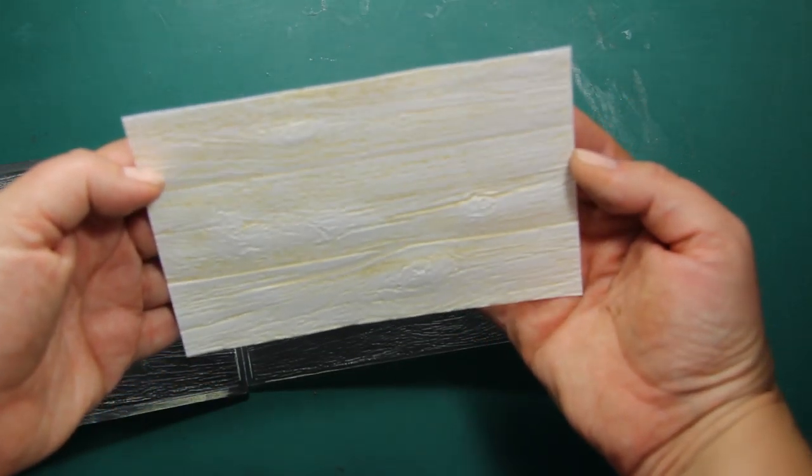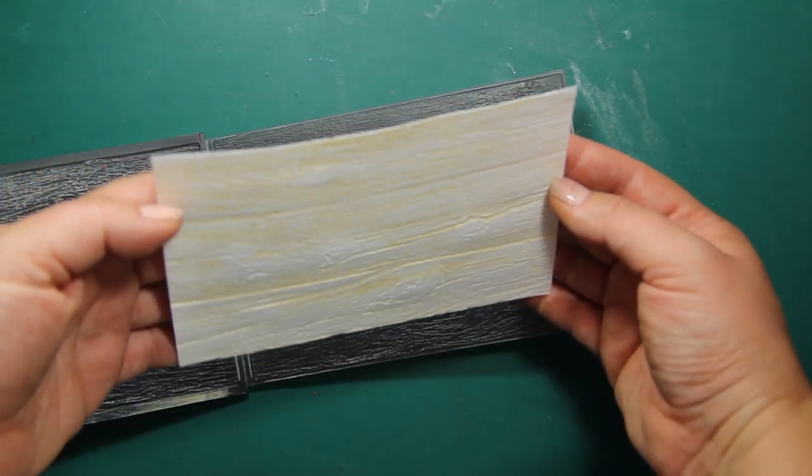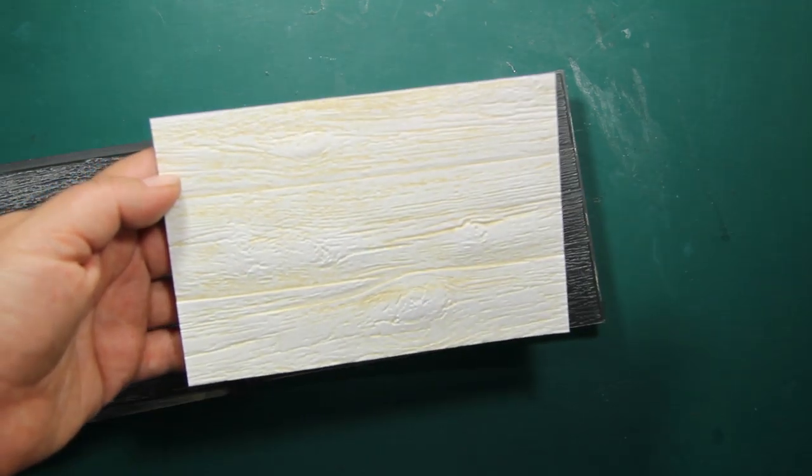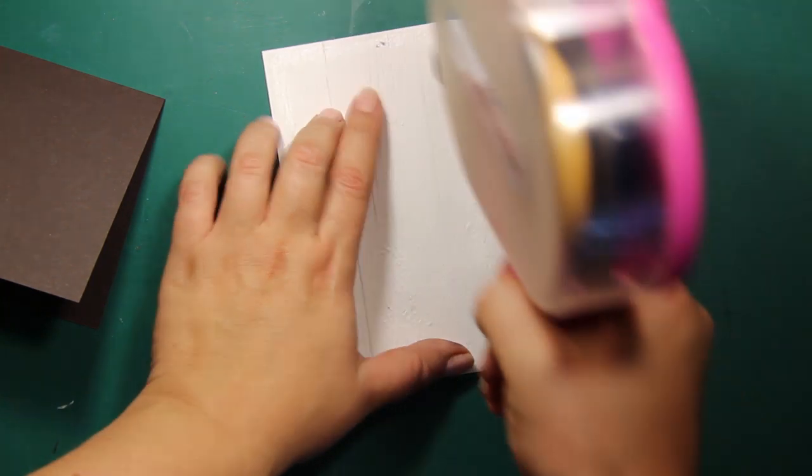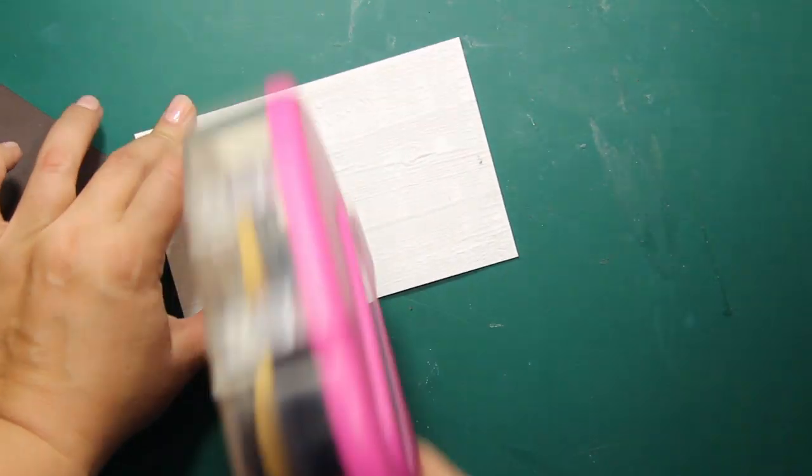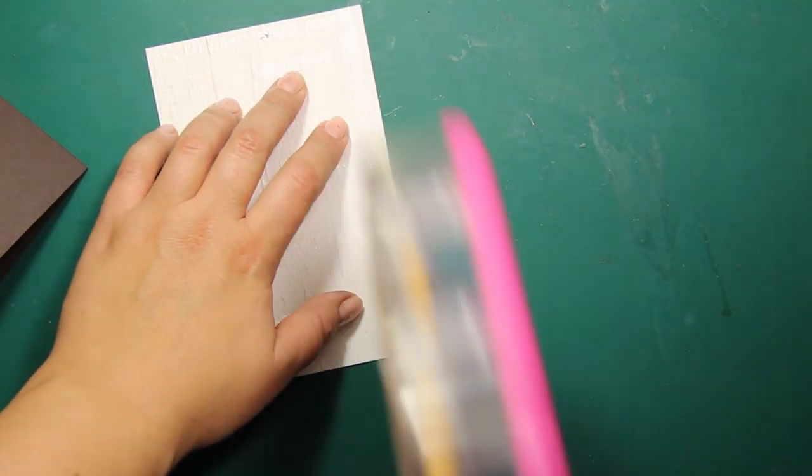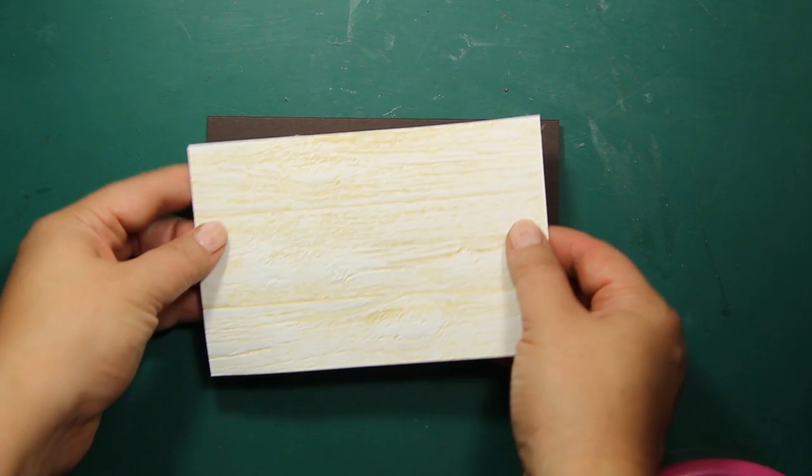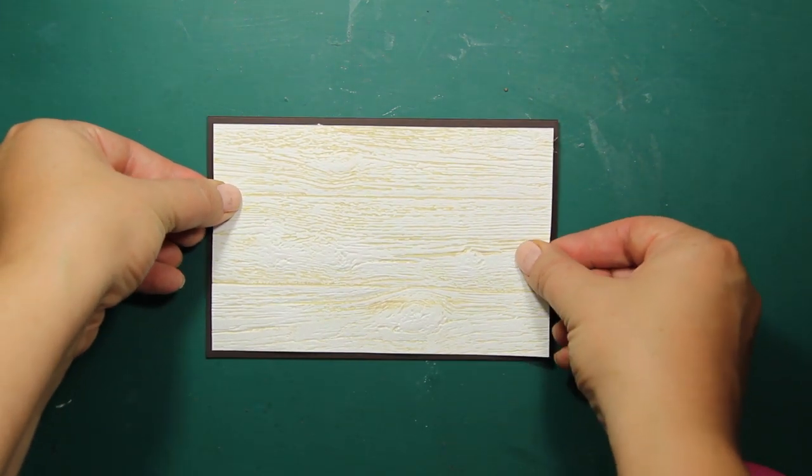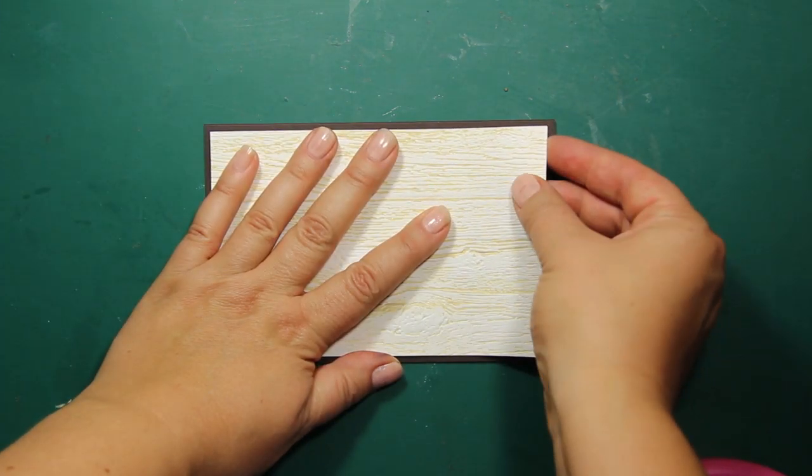And here you can see all the amazing texture and added color. Now I just have to apply some double-sided adhesive at the wrong side of the embossed panel and I'm going to attach it to the card base that is slightly larger than the panel. It measures about four and a quarter by six and a quarter inches.